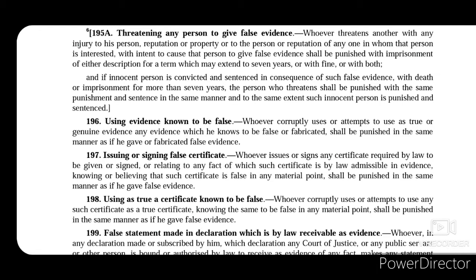Sections 196 to 200 prescribe punishments for using false evidence as genuine. Section 196 talks about using evidence known to be false. Whoever corruptly uses or attempts to use a false evidence as true evidence shall be punished in the same manner as if he had given or fabricated false evidence.